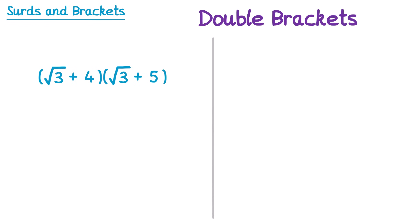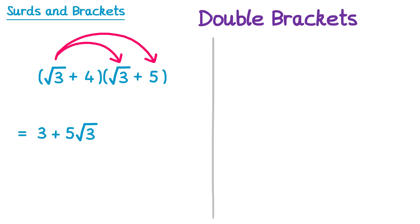We start by multiplying the first two terms in each bracket: root 3 times root 3. Root 3 times root 3 is root 9, which is just 3. Then we multiply the square root 3 from the first bracket by the positive 5 in the second bracket, giving positive 5 root 3. Then we multiply the 4 in the first bracket by root 3, giving 4 root 3.